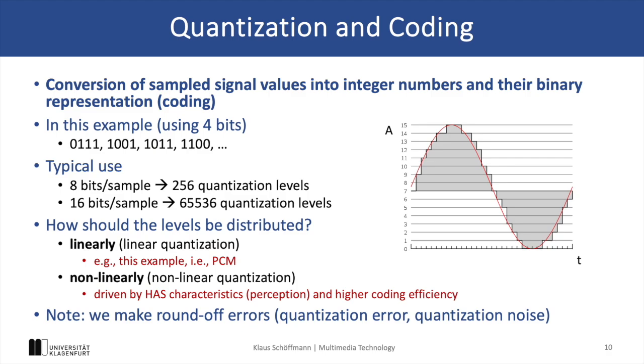For example, if we would have 4 bits, we could represent 16 different levels, and if we have 8 bits, we would have 256 quantization levels.